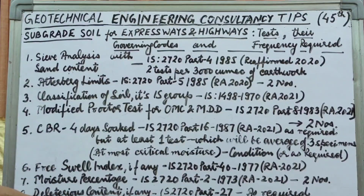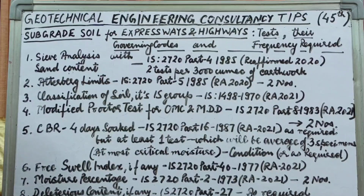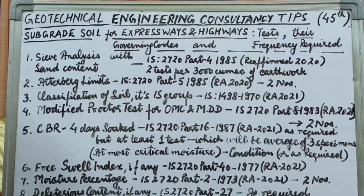We also have to do at least two tests for original moisture content percentage of these samples, as per IS 2720 Part 2, 1973 reaffirmed 2021. Lastly, we need to test for deleterious content — if you have any doubt whether sulfates, carbonates, bicarbonates, fluorides, or any kind of deleterious content are present in the soil.